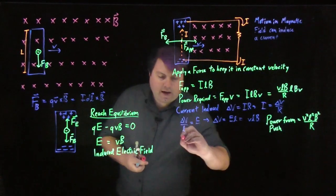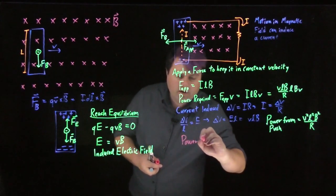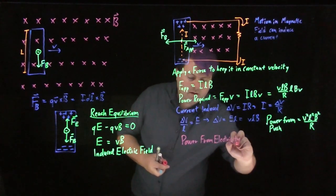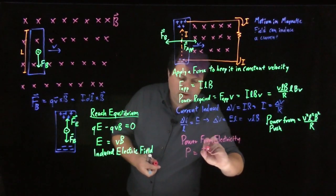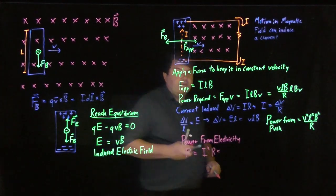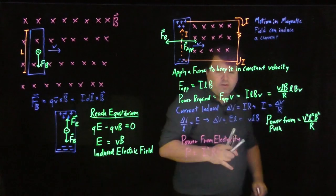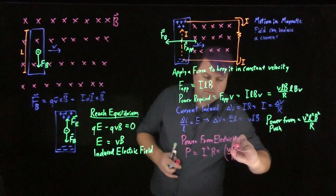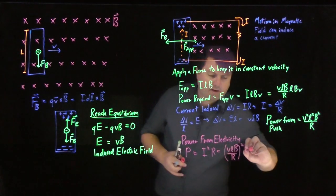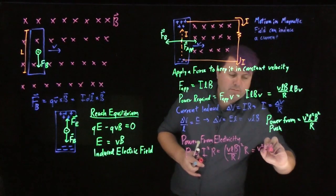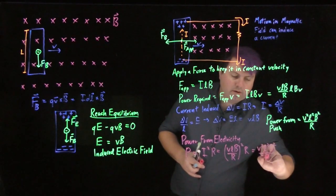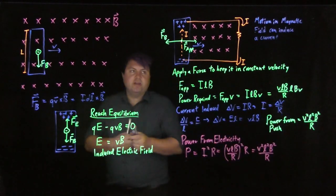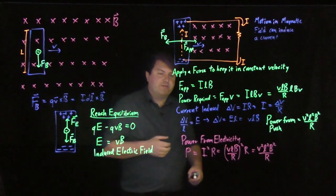Now, the power from the electricity, that power is equal to the current squared times the resistance. Well, we found what the current was. It's VLB over R quantity squared now times this R. So you get V squared L squared B squared over R. So what's nice is that the power from the push and the power from electricity are equal to each other. We're conserving energy. We're conserving power.